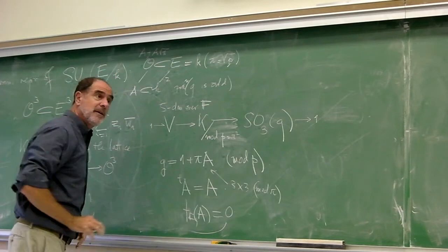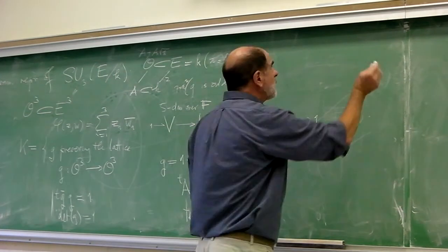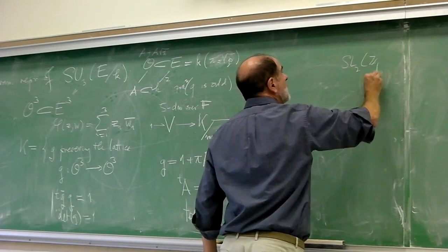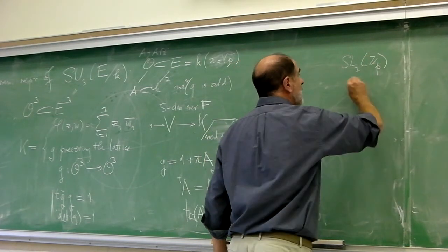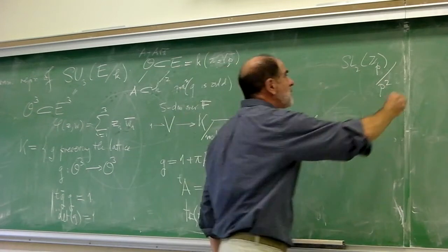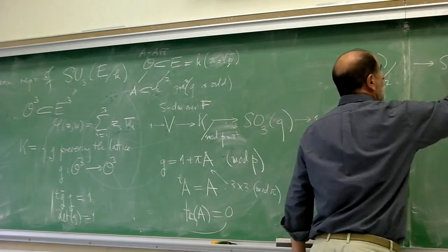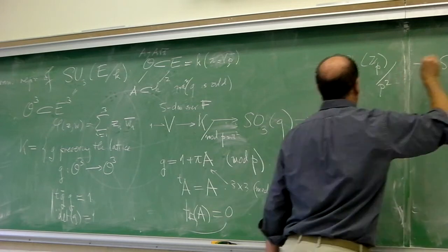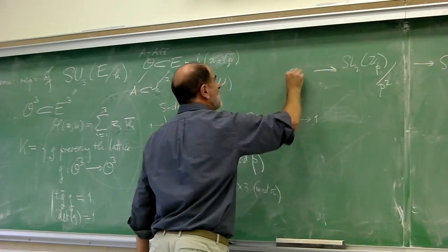And then I have a kernel of that. If you did this for a group like SL2 of Z2, and you reduce mod P squared, instead of this mod P, it would map to SL2 of Z mod PZ. That would be the reduction mod P. And the kernel would be the adjoint representation.